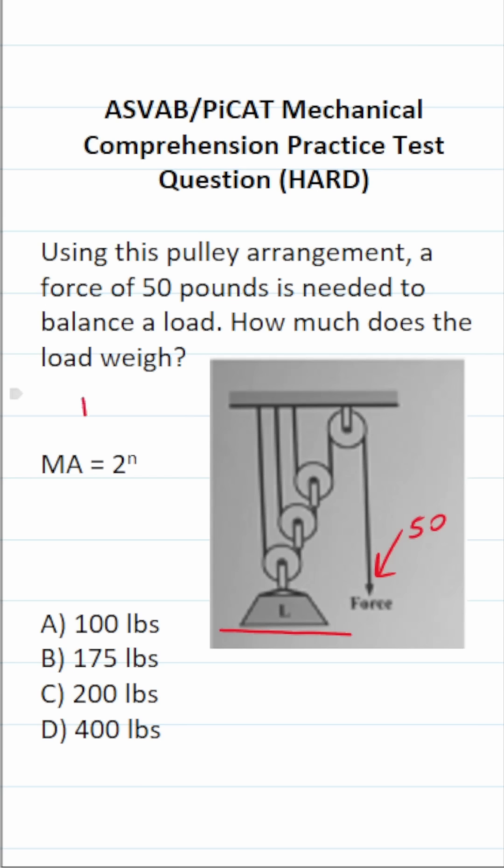The first thing we have to determine is the mechanical advantage that we get using this compound pulley system. And that's going to be equal to 2 to the n power, where n is the number of movable pulleys in our compound system.